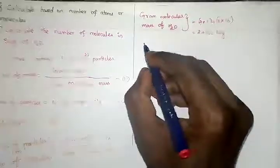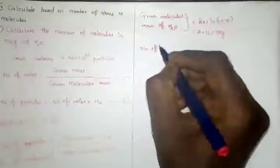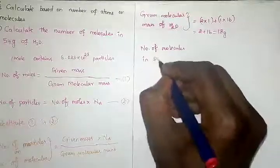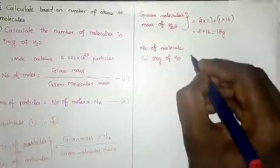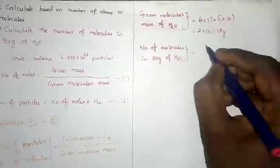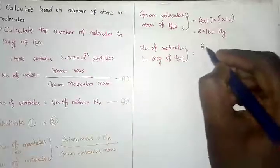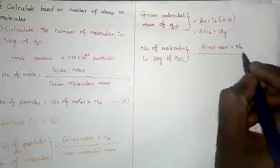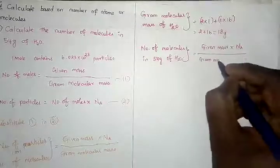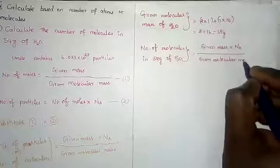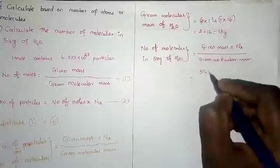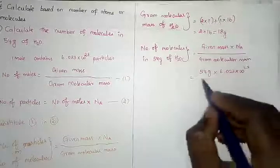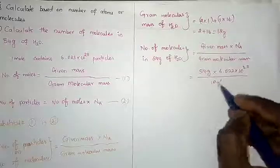The number of molecules in 54 grams of water equals given mass into Nₐ divided by gram molecular mass. Substituting the values: 54 grams × 6.023 × 10²³ divided by 18 grams. The grams cancel out.